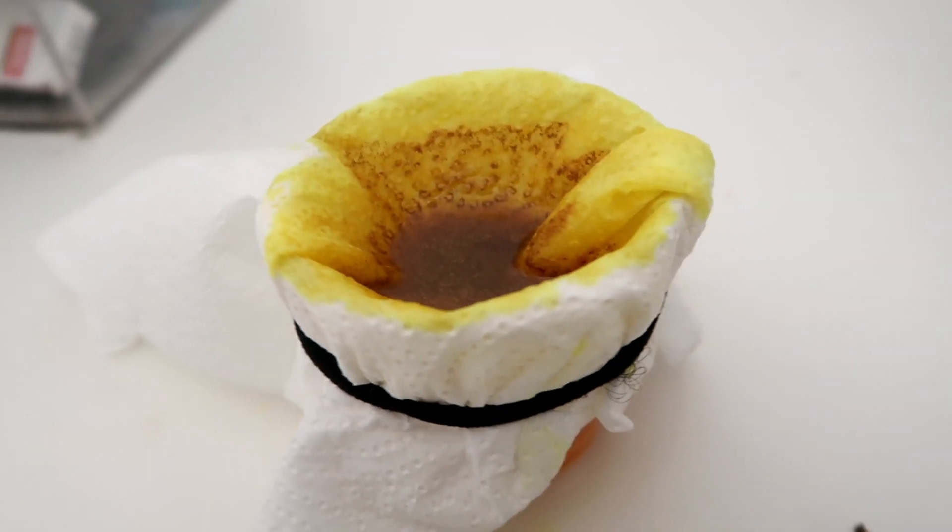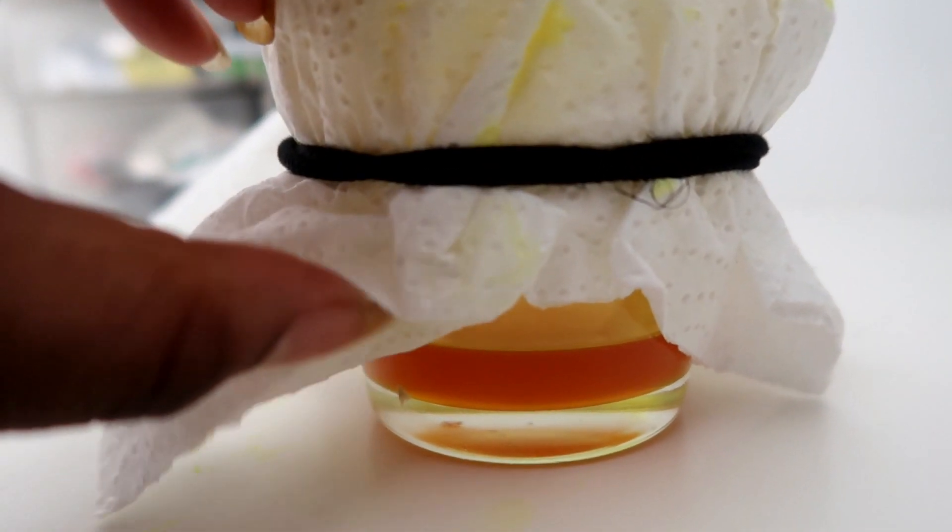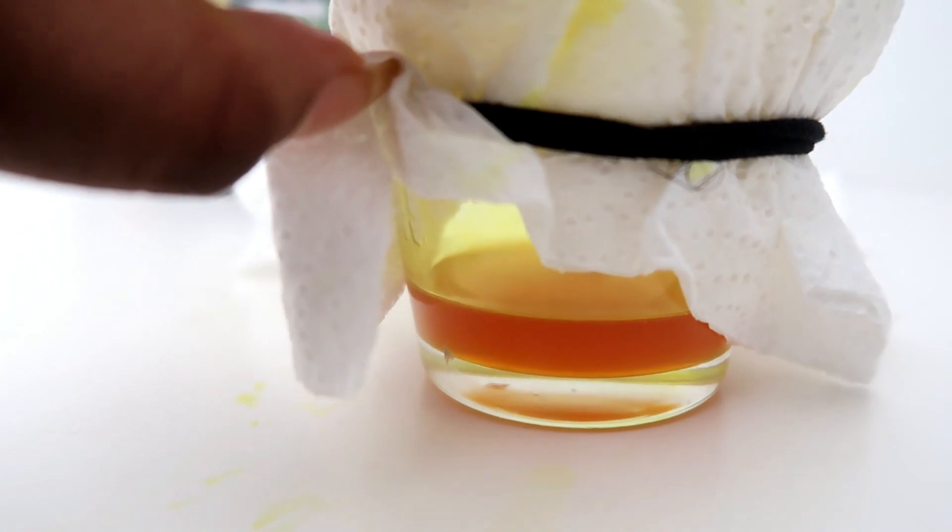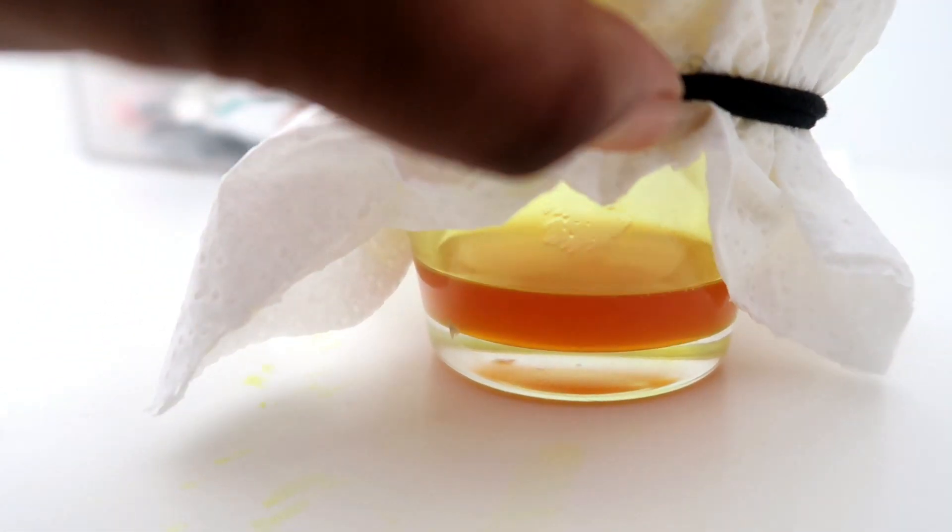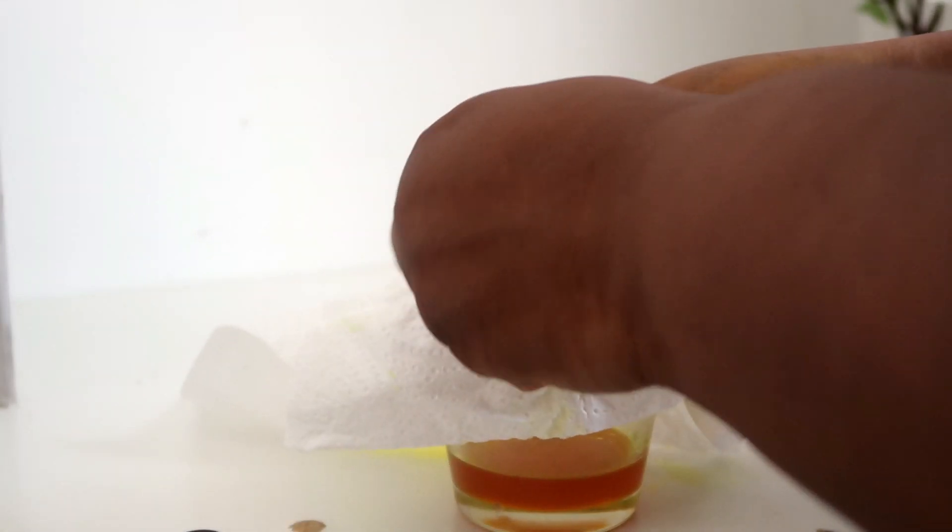So after I finished straining my DIY turmeric oil, this is what it looked like. Next I just really carefully removed the tissue paper that had the remaining bits in there and then I just gave it a little bit of a squeeze to get out the oil.